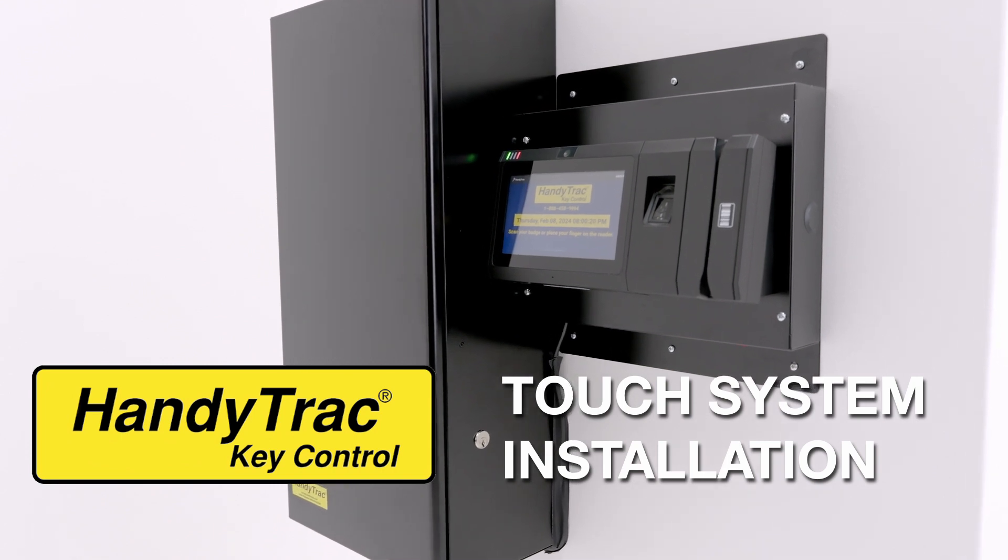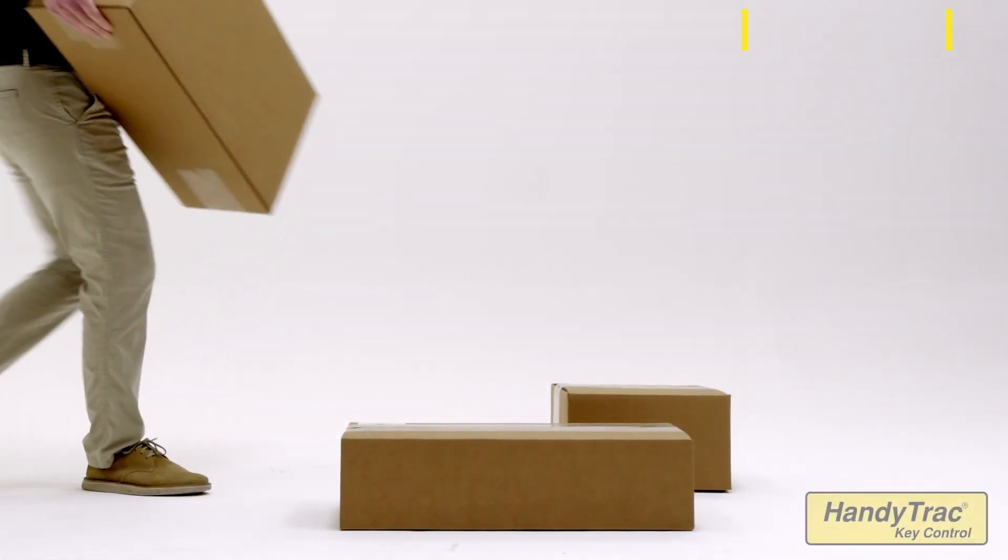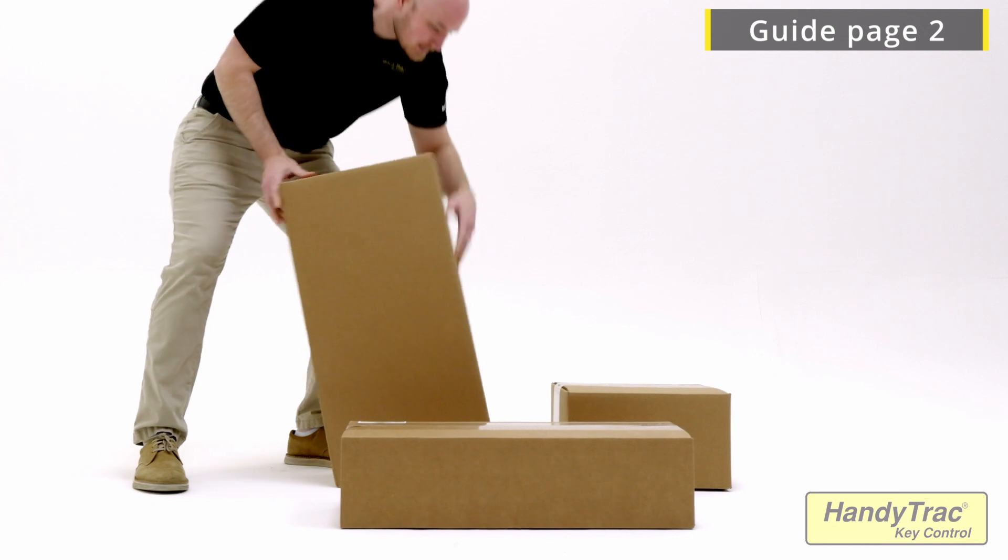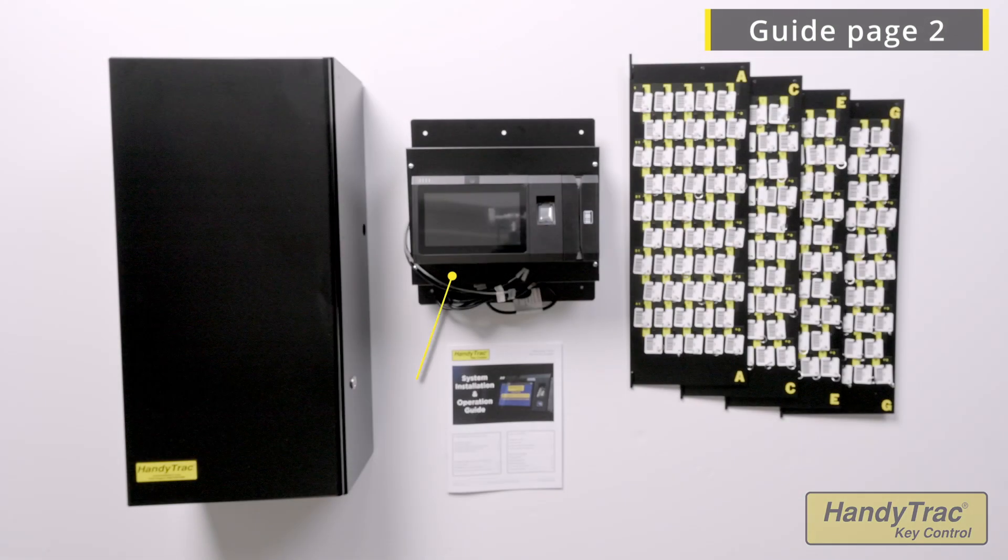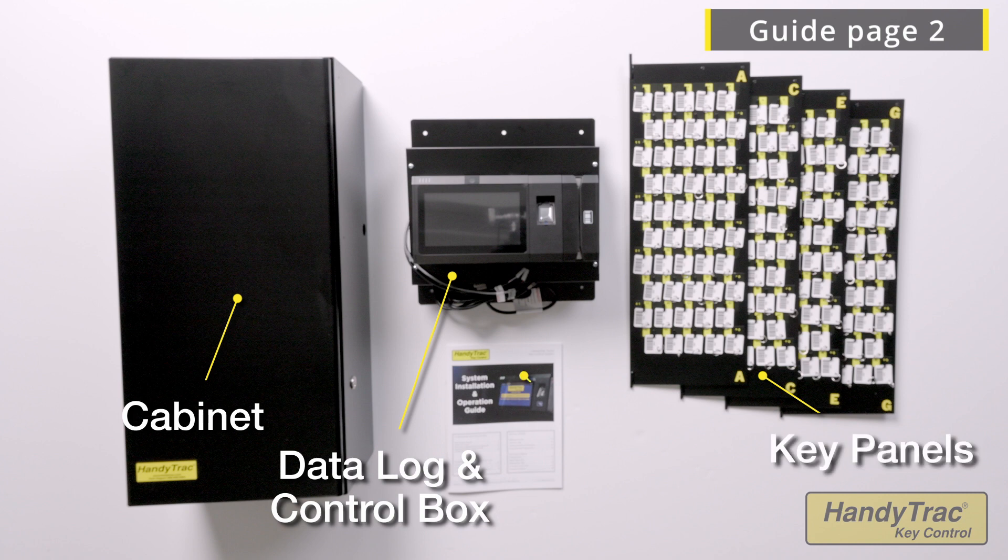Welcome to the HandyTrack installation video. Your typical HandyTrack system delivery will include three boxes: a data log and control box, your cabinet, your key panels, and a setup package including an installation and user guide.